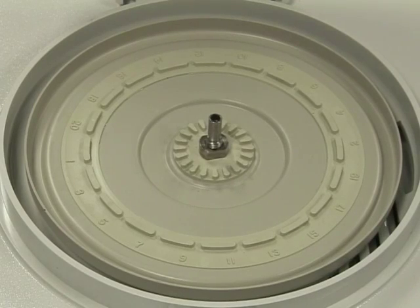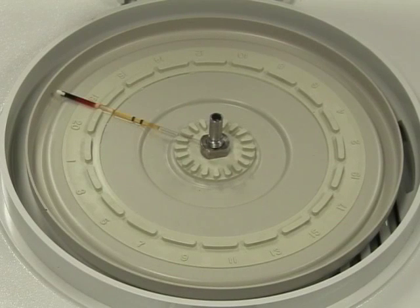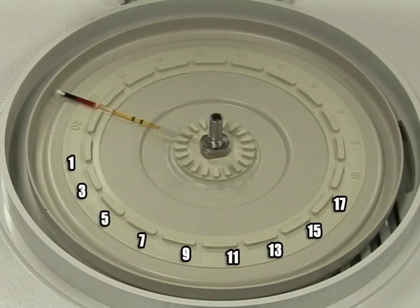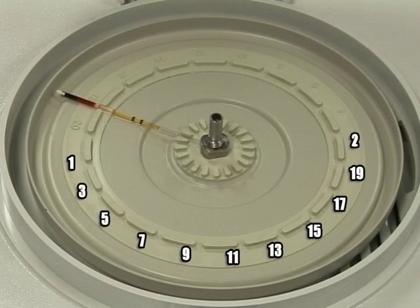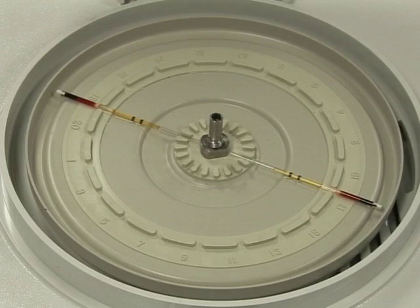Once a sample is loaded into the accutube, place the tube in one of the numbered slots. The rotor is numbered to assist with balancing the tubes. Always remember to place tubes opposite each other on the rotor.